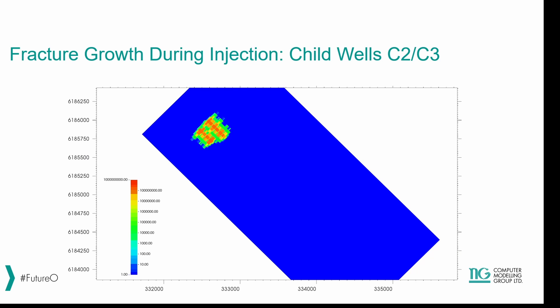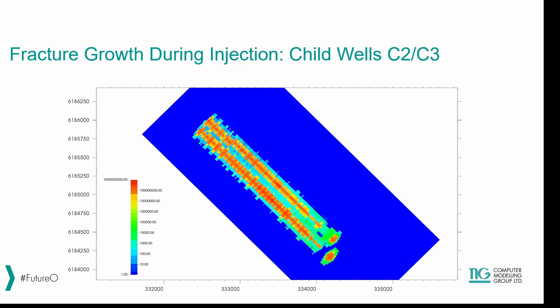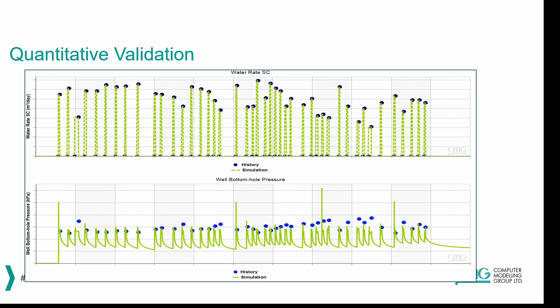The video on screen shows the SRV creation for child wells C2 and C3. You can see the fractures are not growing uniformly — there are differences between the two; it's more of an SRV-type fracture growth based on the anisotropy of properties along the length of the well. The history match image shows matching for all stages, where the average injection rate was used as a constant and matched against the bottom hole pressure during injection. The bottom hole pressure has been matched very closely for all stages.